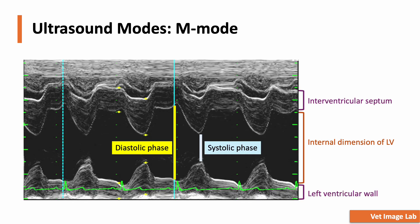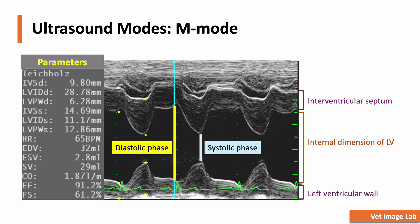Here we have an example of an M-mode image captured by placing the M-mode cursor through the left ventricle at the level of the papillary muscles. With this, we can track the movement of the interventricular septum, the left ventricular internal dimension, and the left ventricular wall over time. It's divided into two phases: during diastole, marked by the yellow line, the left ventricle relaxes and fully expands, allowing blood to fill the chamber. Then during systole, indicated by the blue line, the left ventricle contracts, reducing its internal dimension as it pumps blood out. Key measurements include the thickness of the interventricular septum, the left ventricular wall, and the left ventricular internal dimension — helping us detect abnormalities like hypertrophy, dilation, or impaired contraction.